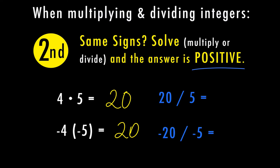Let's look at a couple of division problems. 20 divided by 5 — well, 20 divided by 5 is 4, and they have the same sign so my answer is positive. Negative 20 divided by negative 5 is also 4, and because they have the same sign my answer is still positive.